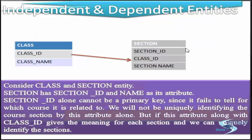On the left hand side is the class entity and on the right hand side is the section entity. Section has a section ID and name as its attributes. The section ID cannot be considered alone as a primary key, since it fails to tell us which course it is related to. We cannot uniquely identify the course section by its attribute alone. But if this attribute along with the class ID gives meaning for each section, then we can uniquely identify the sections.